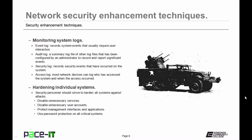So let's talk about reviewing system logs. What are the logs that you should be paying attention to? The first one is the event log — it records system events that usually require user interaction and is a good way to find out when users are accessing the system and which systems they are accessing. Audit logs should also be reviewed; they're a summary log of other log files configured by an administrator to record and report on significant events. Security log files also need consistent review, as these record security events that have occurred on the system. And finally, there are access logs — most network devices can log who has accessed the system and when that access occurred.